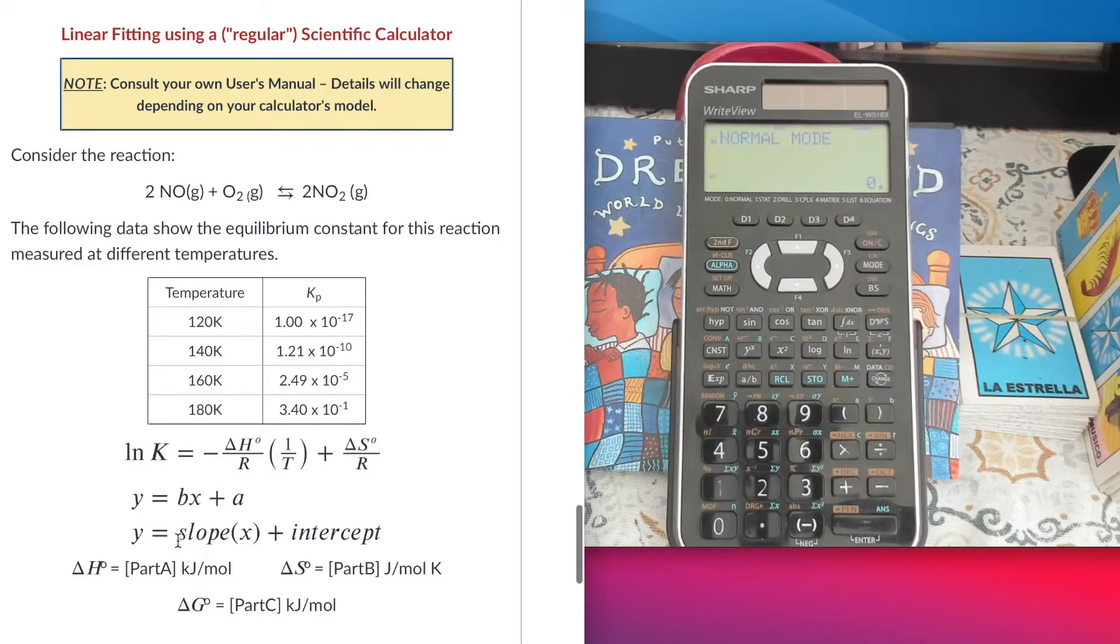I'm going to get at the end the slope from the straight line coming from linear fitting, and that slope is related to the enthalpy of my reaction. The intercept is going to be related to the entropy of that reaction.